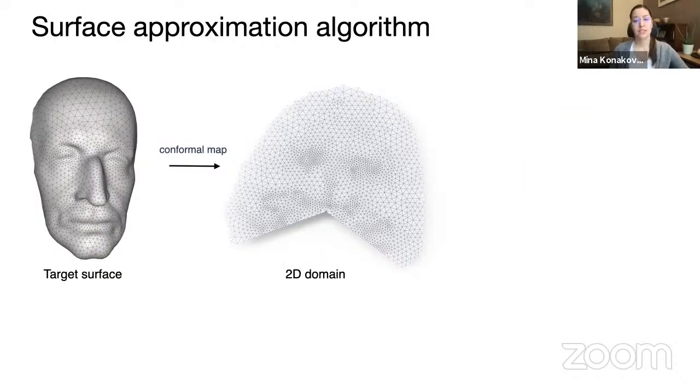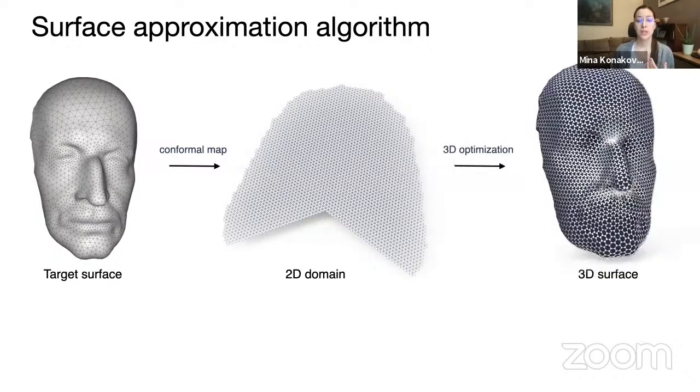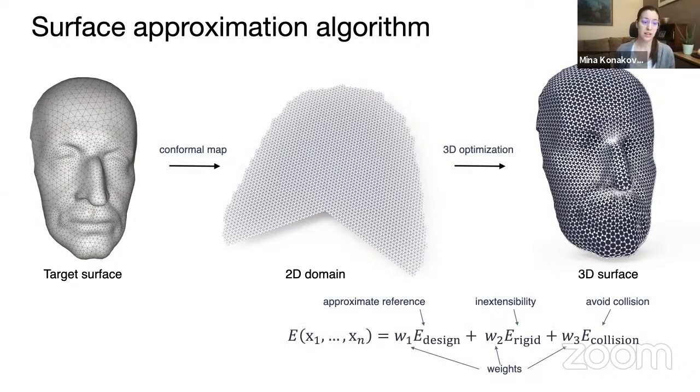And this was fundamental because otherwise we could not realize the surfaces with our physical requirements. Now, our final algorithm looks as follows. We first find the location of these cone singularities we need and we compute the conformal map. Then we can overlay a grid of regular triangles over the 2D domain to determine the 2D layout of the material and the local stretching we need in 3D. And then we run a 3D optimization to lay out our auxetic linkage onto the target surface. And effectively what we are doing here is we are running a global optimization which pushes the linkage close to the reference surface. It makes sure that the triangles remain rigid because that's the physical reality and avoid collision between the neighboring triangles.